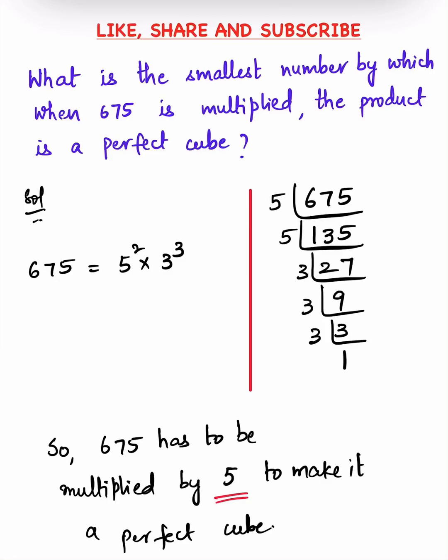What is the smallest number by which when 675 is multiplied, the product is a perfect cube?